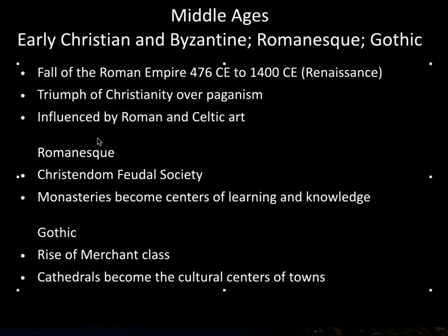During the Romanesque time, we had another change in political and social structure. We saw the rise of what was called Christendom and feudal society. In feudal society, there is a king who rules by divine right over the other classes of people. Feudal society was very stratified — you would have the king and you would have the church, and early on the king was both the political and religious head.